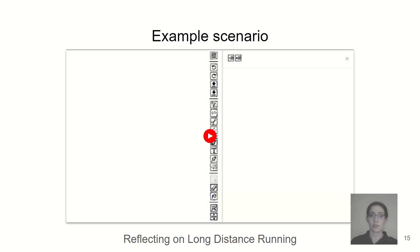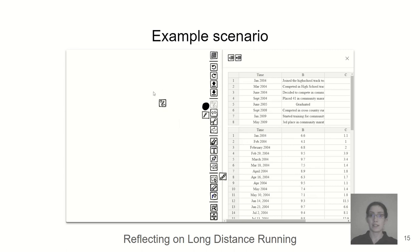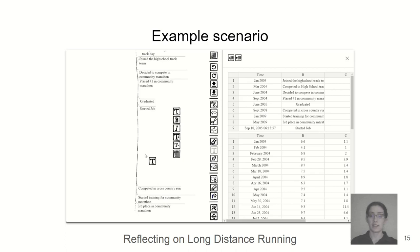In this scenario, the author has reached a significant milestone in her hobby of long-distance running, and she wants to reflect on her journey. She's noted down a number of significant events and collected statistical data on her running. She starts by visualizing the data on a simple line and immediately sees a large gap.